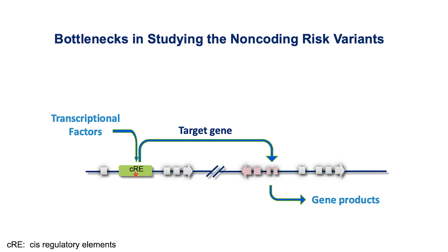Firstly, unlike protein-coding sequences, maps of the regulatory elements in the human genome and their cell type specificity are far from complete. Secondly, the target genes of transcriptional regulatory elements are not fully defined. And thirdly, the effects of sequence variants on transcription factor binding is largely uncharacterized.